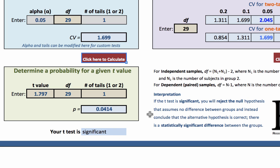You can also confirm that if this was a two-tailed test, the results would not be significant. But we used a one-tailed test, so the results were significant. To the right, I wrote a simple interpretation. If the t-test is significant, you will reject the null hypothesis that assumes no difference between the groups, and instead conclude that the alternative hypothesis is correct, that there is a statistically significant difference between the groups.